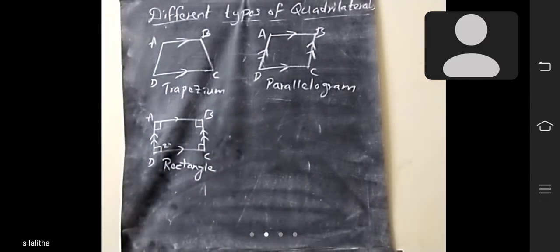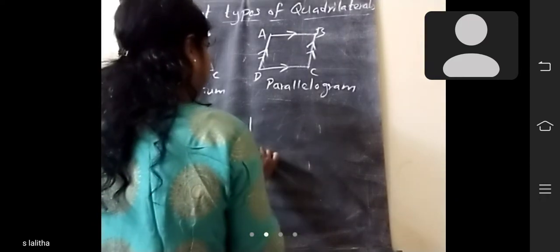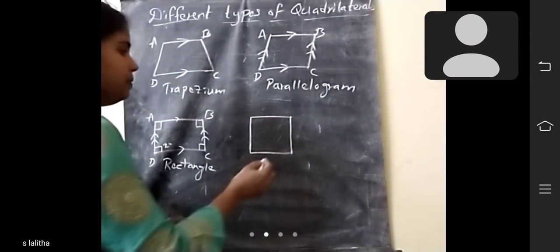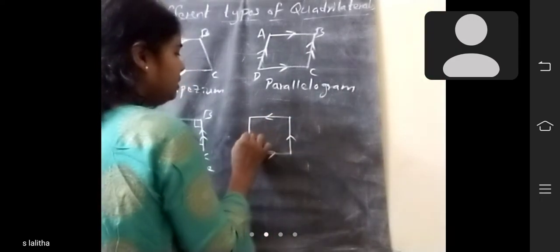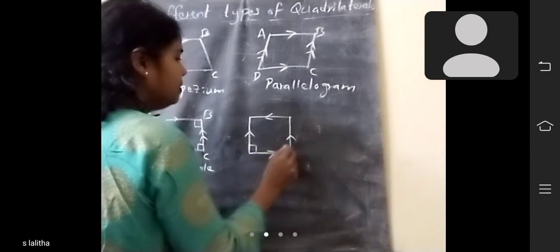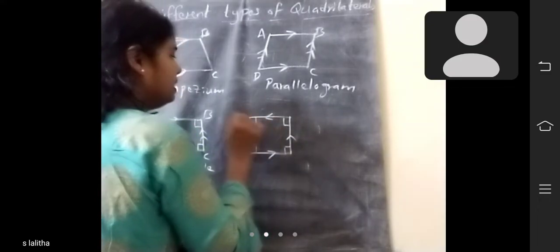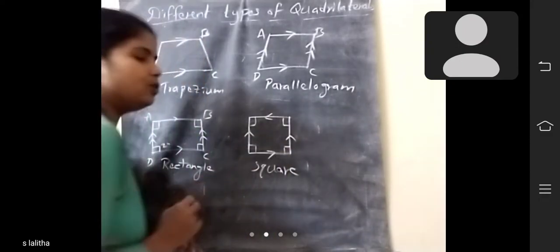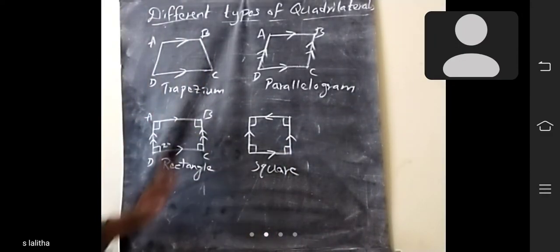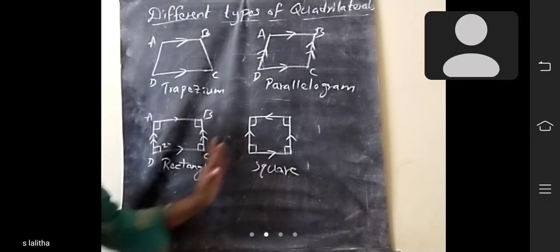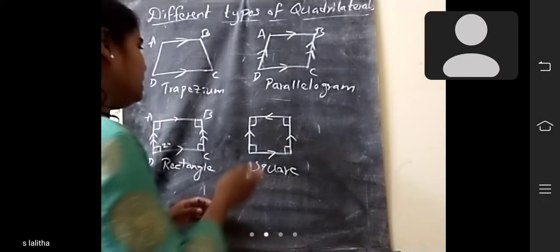What do you call this one? Rectangle. Another type: here all sides are equal and all angles are also 90 degrees. What is the difference between rectangle and square? In rectangle, opposite pairs are equal; here in square, all sides are equal. All angles should be 90 degrees in both. So it is a square.